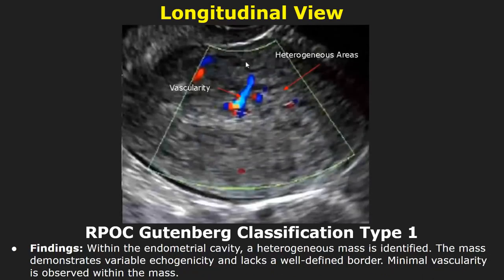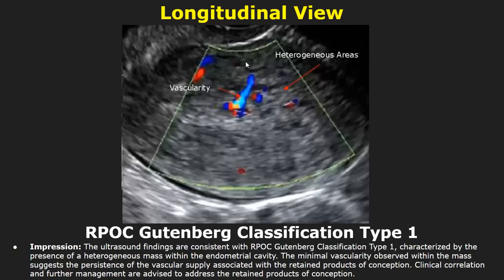Here is a type 1 RPOC. A heterogeneous mass is identified. The mass demonstrates variable echogenicity and lacks a well-defined border. Minimal vascularity is observed within the mass. In the impression, you can mention the type 1 RPOC classification with findings of a heterogeneous mass with minimal vascularity, and in the end you can write about clinical correlation and further management.